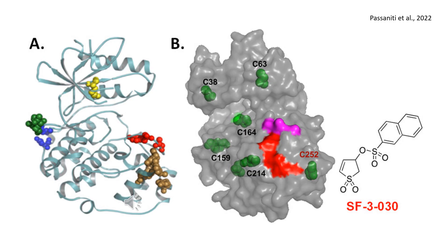Unlike ATP-competitive inhibitors that completely block kinase function, SF-3-030 selectively targets substrate docking interactions, preserving partial kinase activity and reducing off-target effects. In Panel B, the molecular surface model of ERK2 displays all cysteine residues in green.